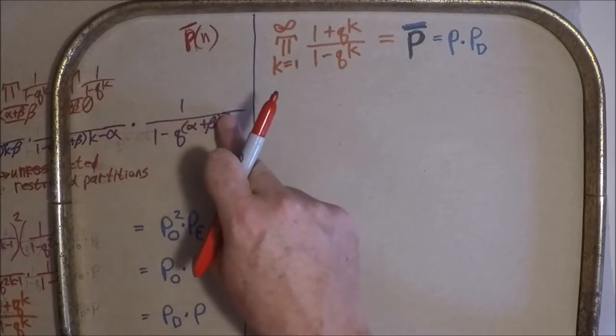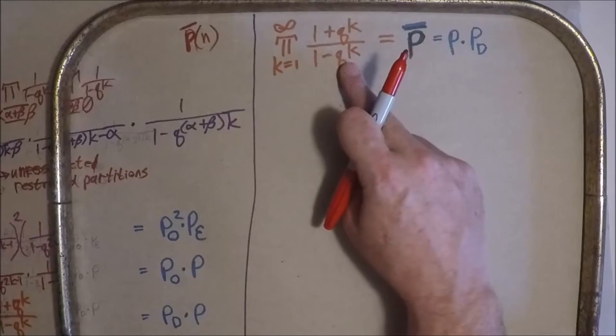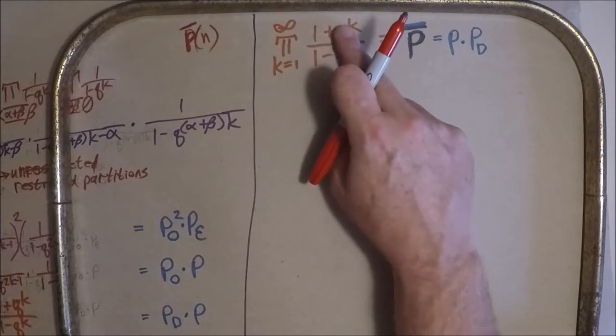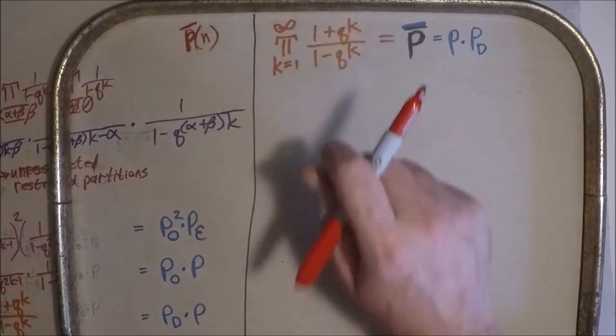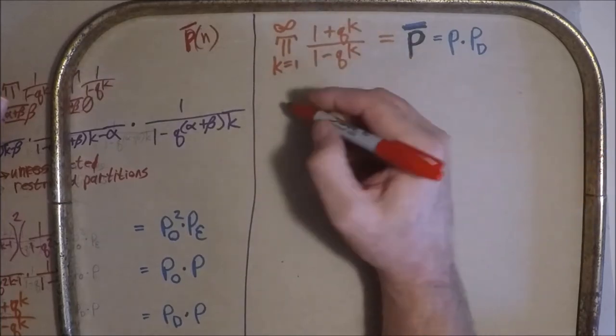By what we did generalizing this to alpha and beta, we can see that this one's going to generalize in exactly the same way. It's just going to have this additional term here. So we have, well, let me write it out.